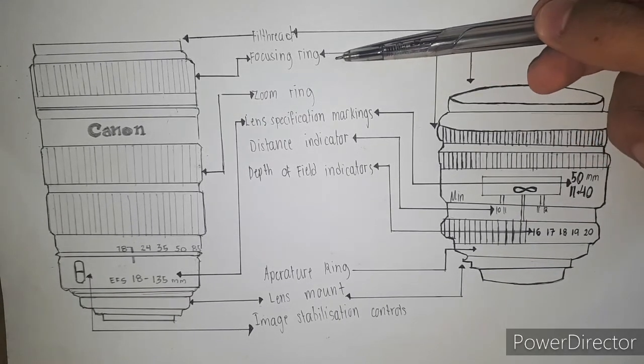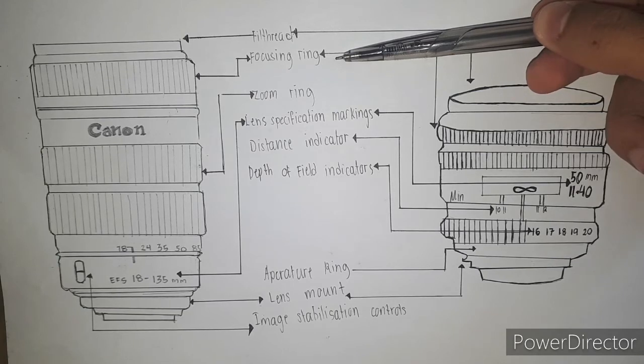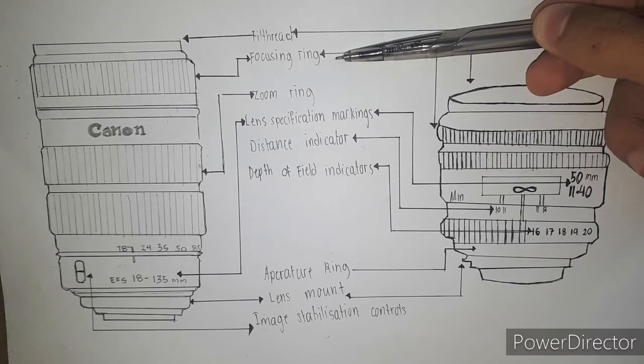The second one is the focusing ring. This is the section of the lens that rotates to allow the photographer to focus the image. On automatic cameras, the ring is moved by a small motor within the lens whenever you press the shutter release button halfway down.